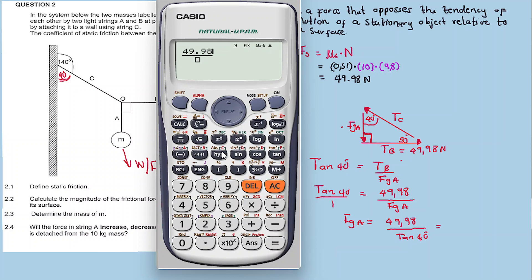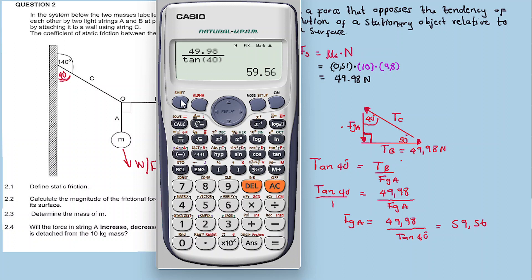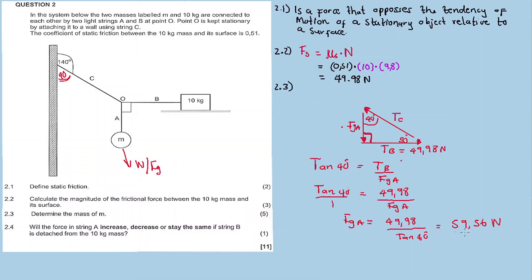Calculating: 49.98 divided by tan 40° equals 59.56 Newtons. It's best to round to three decimal places at this intermediate step rather than the final answer, to maintain accuracy. The final answer should be to two decimal places. Rounding to higher decimal places at intermediate steps increases the accuracy of the final answer.